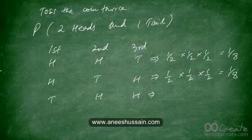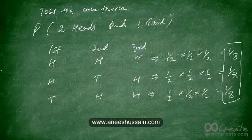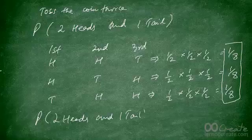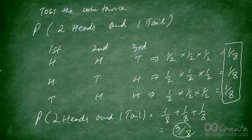The third arrangement is Tail, Head, Head, which is again 1/2 × 1/2 × 1/2 = 1/8. Any one of these three outcomes is satisfactory because the requirement was two heads and one tail in any order. So the probability of getting two heads and one tail is 1/8 + 1/8 + 1/8 = 3/8.